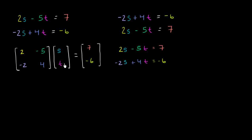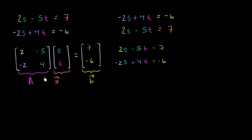But now that we've set this up, how do we actually solve something like this? To think about this, let's frame it as a literal matrix equation. Let's say matrix A is the coefficient matrix, the column vector x is the unknowns s and t, and column vector b is the right-hand side 7, negative 6. So we're saying A times the column vector x is equal to the column vector b. This is what they mean by a matrix equation, and you'll see forms like this a lot in physics, even without specifying the dimensions.